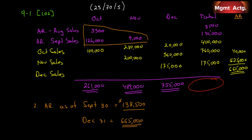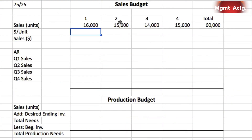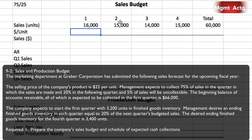Even though the December 31st AR wasn't required, filling in that column doesn't take much — especially with a spreadsheet — so that if you have to answer that question later, it answers itself. Always be prepared. That wraps up exercise 9.1. Exercise 9.2 involves a sales and production budget.